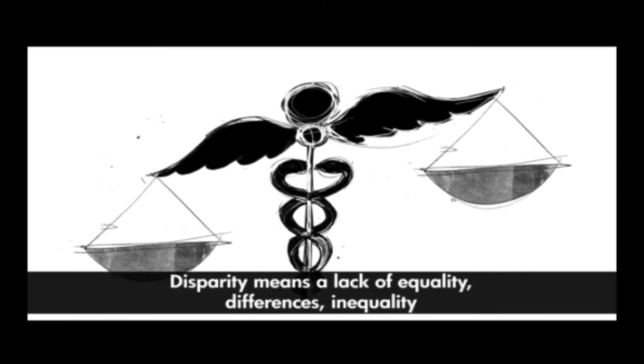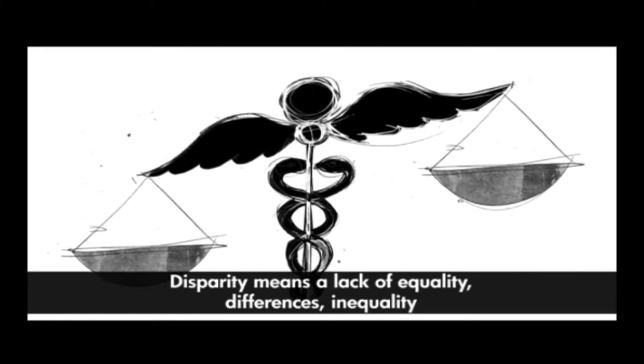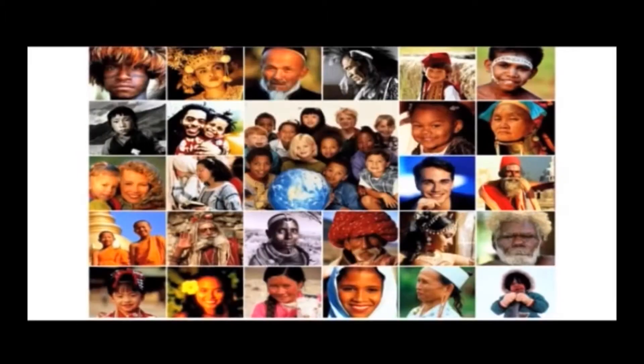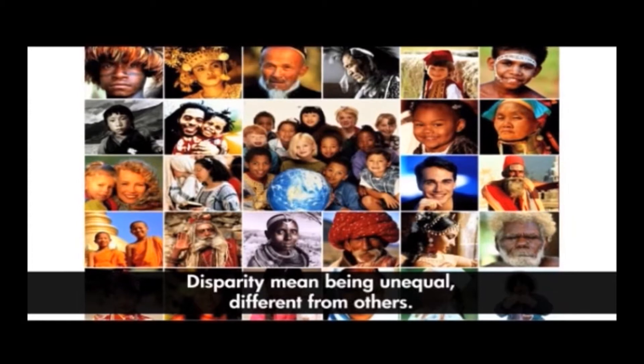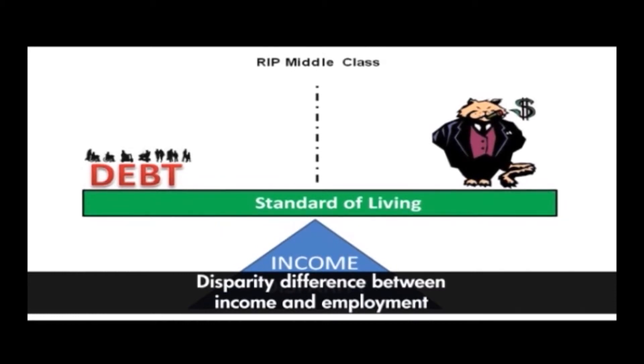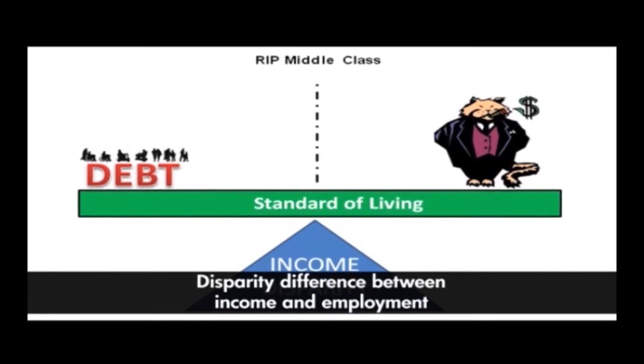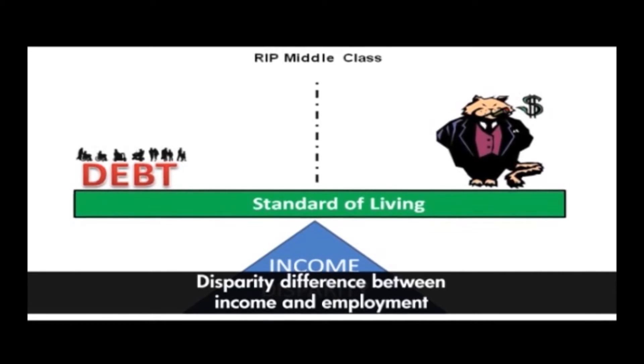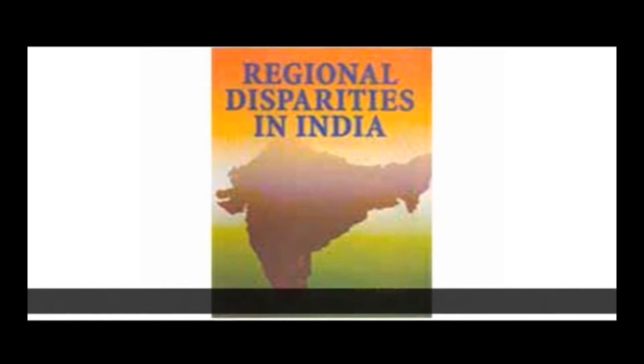Definition of disparity: Disparity means a lack of equality or similarity — differences and inequality. It can also mean the condition or fact of being unequal or different from others. It can be explained as differences between regions with respect to specified variables such as income and employment. By regional disparities or imbalances, one means wide differences in per capita income, literacy rates, availability of education, health services, and levels of industrialization between different regions.